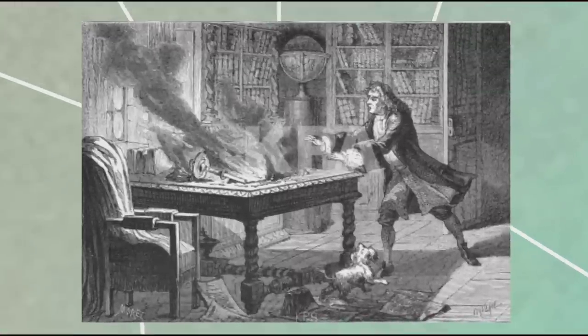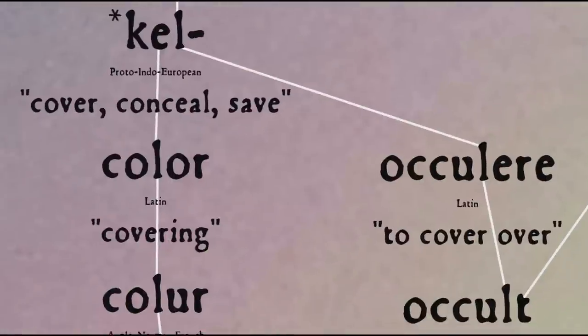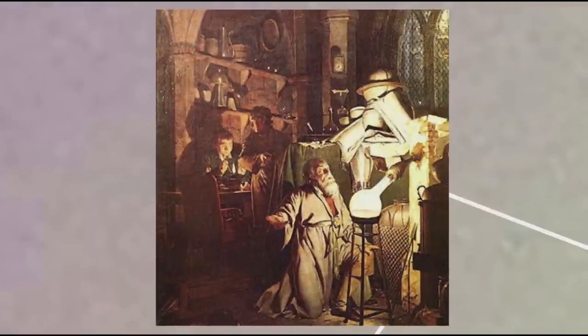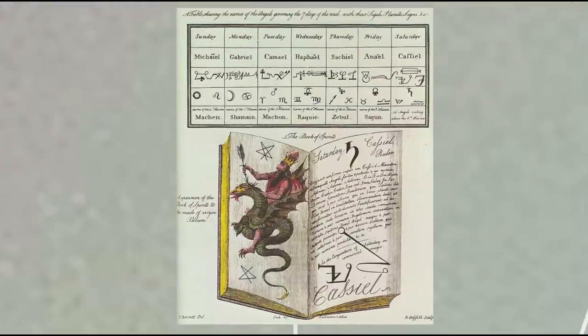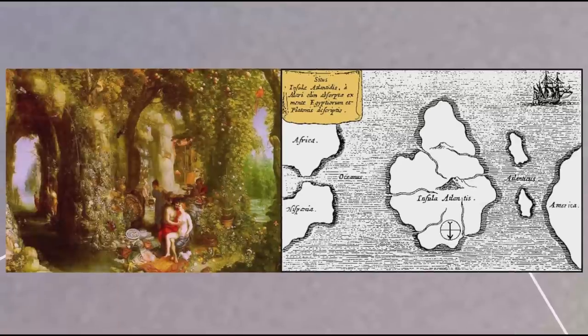It sounds strange now to think of Newton as being into the occult, but this work was even more important to him than his scientific and mathematical work. The word 'occult', by the way, comes from the root 'kel', to cover, conceal — the same root that lies behind the word 'colour', since it's hidden knowledge. The particular types of hidden knowledge Newton was interested in were alchemy and the search for the philosopher's stone, decoding the Bible to extract scientific information and make prophecies, and theories of Atlantis, which he connected with the island of Ogygia where Calypso kept Odysseus.